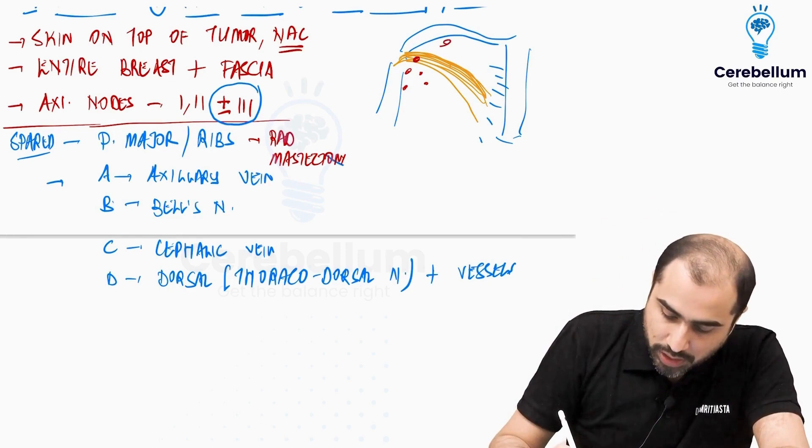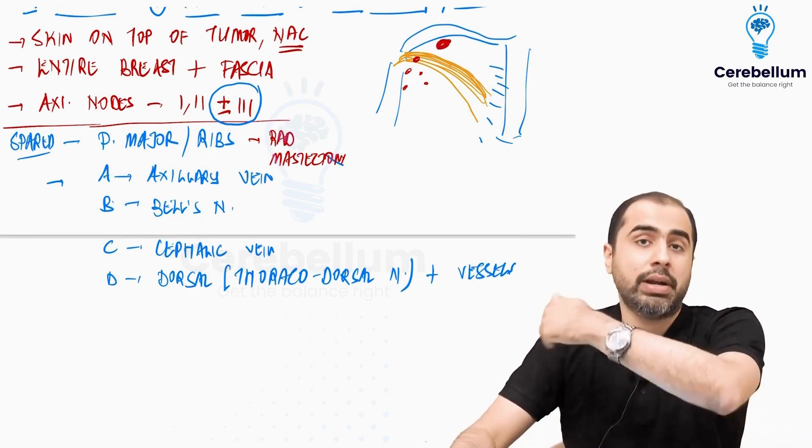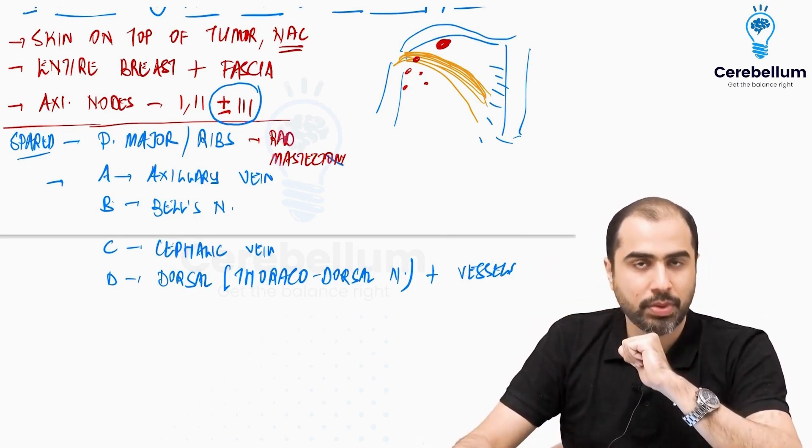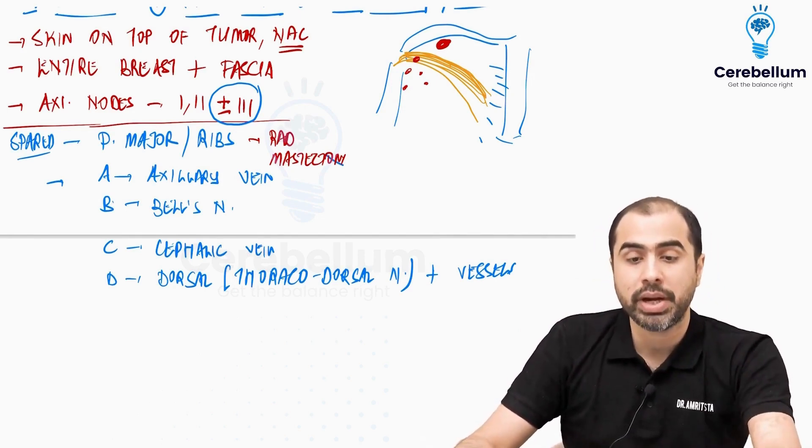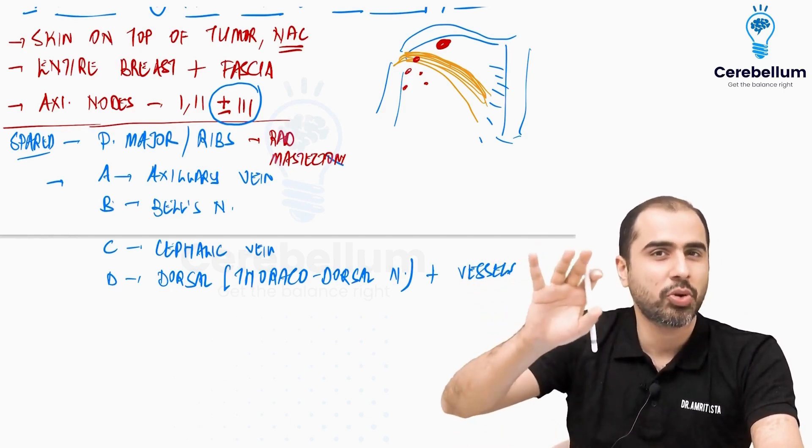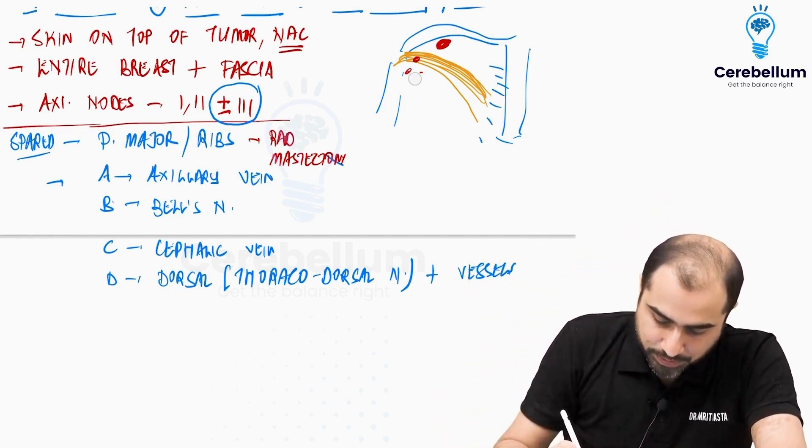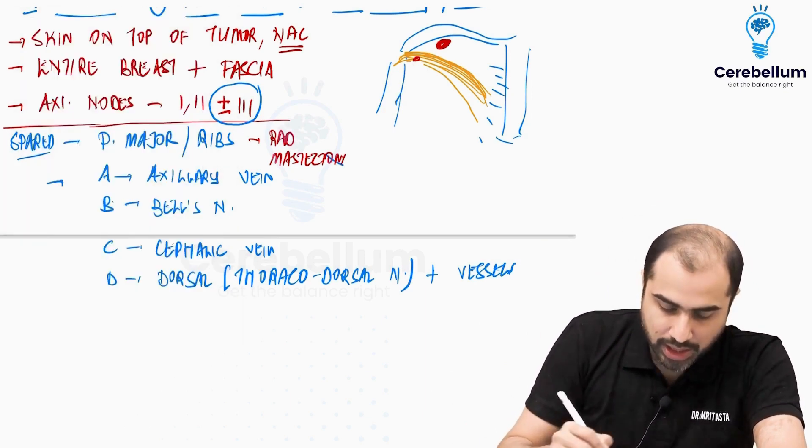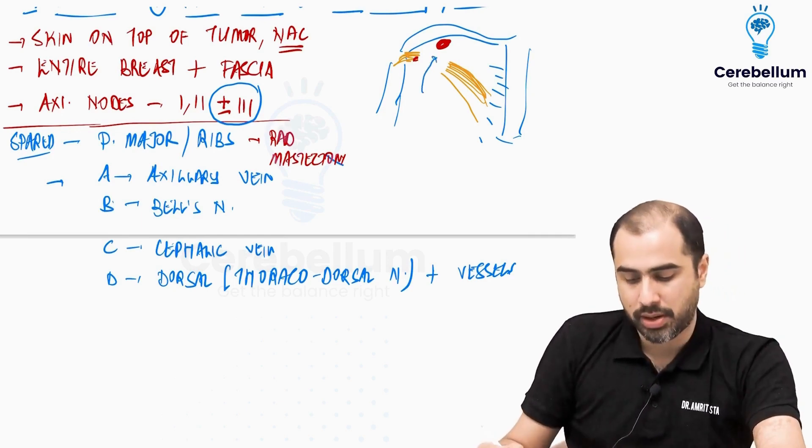Problem is level 3 nodes which are over here, the apical nodes. They are behind posteromedial to pec minor. I told you in the anatomy, they are posteromedial to pec minor. Since they are posteromedial to pec minor, sometimes it is not possible to remove them. So what I do is, if I want to reach them, I can excise a part of the pec minor and then go and remove the apical node.